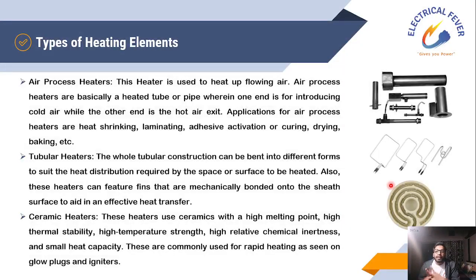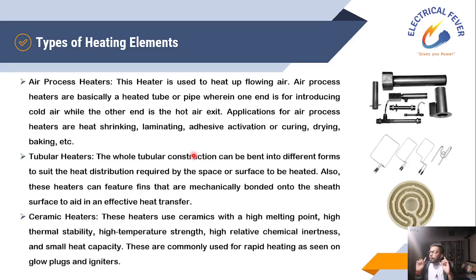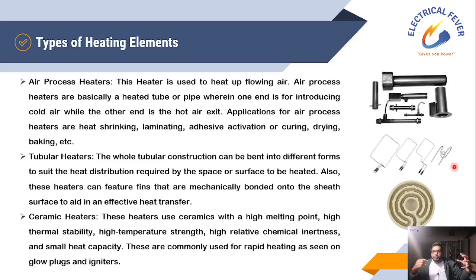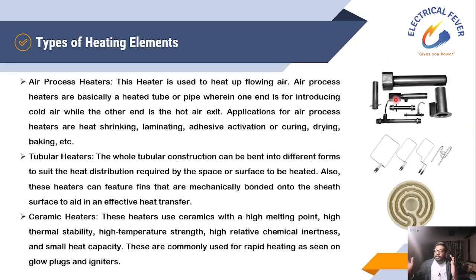Now, the types of heating elements. First of all, air process heaters. Air process heaters are a kind of heater which takes cool air as input and gives hot air as output — like in a hair dryer. The air process heater is a pipe-type heater. In the walls of the pipe, there are heating elements present — two heating elements in parallel. Air enters as input and exits as warm output. This is the basic purpose of air process heaters.